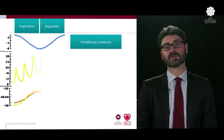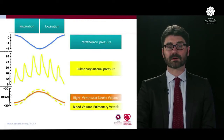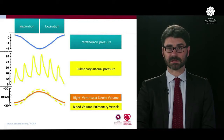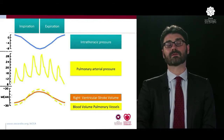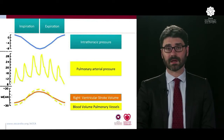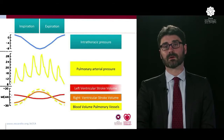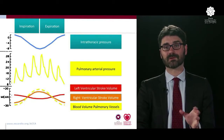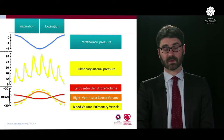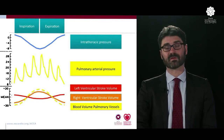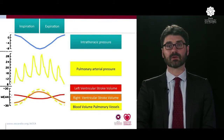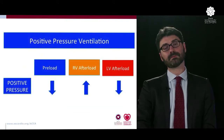If we measure continuously the pulmonary pressure and the stroke volume of the right ventricle, we'll see some cyclical changes. Because the effect on the afterload of the right and left ventricle are opposite with ventilation, we will also see changes on the left ventricular output, but these are usually on the opposite side of the cycle. Ultimately, with the Frank-Starling mechanism, the two outputs have to be equal over time.